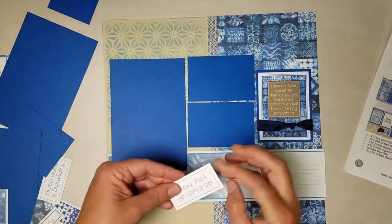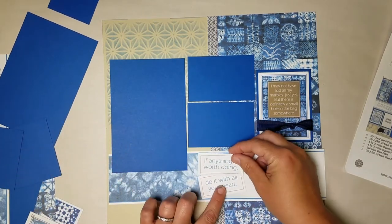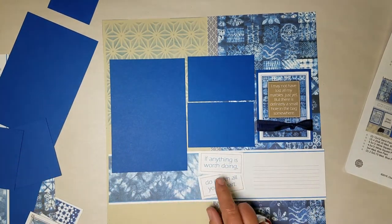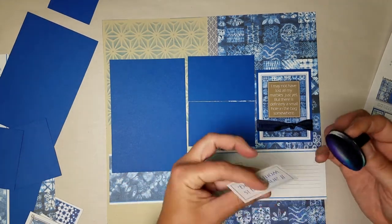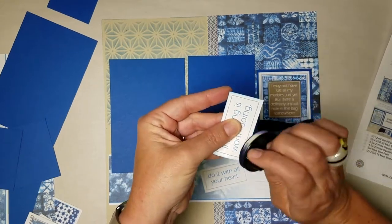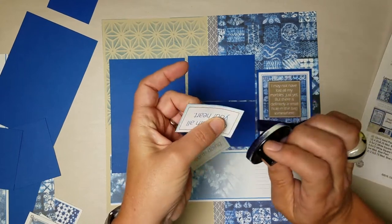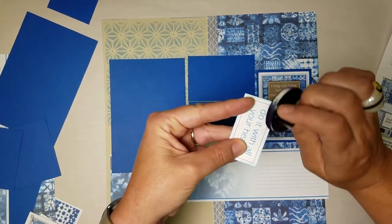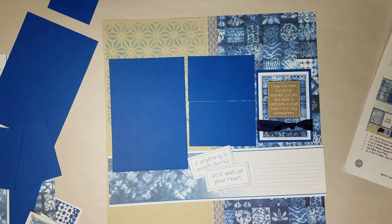Then just down in the lower right here I used, if anything is worth doing, do it with all your heart. I inked the edges of this just to kind of bring forth that sapphire ink. And just used my little ink applicator which I love because it keeps my fingers away from the ink, which then keeps ink from places I don't want it to land. Just attach those pieces at an angle.